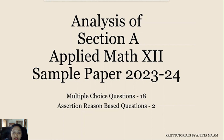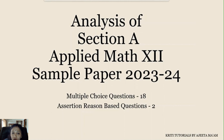Today we are going to do the analysis of Section A. As we all know, Section A comprises 20 questions in all, out of which 18 will be MCQs of one mark each and two will be assertion-reason based questions, also of one mark each. So in all, Section A is for 20 marks. Now we are going to analyze what pattern they have set, from which unit they have given how many questions, so that it will be easy for you to study for the exams.